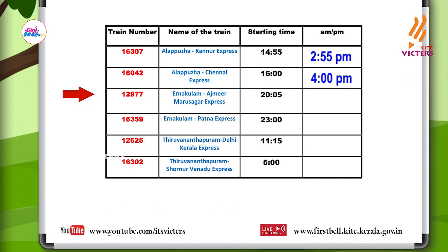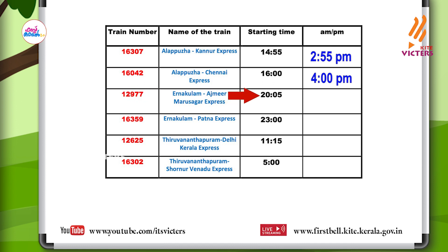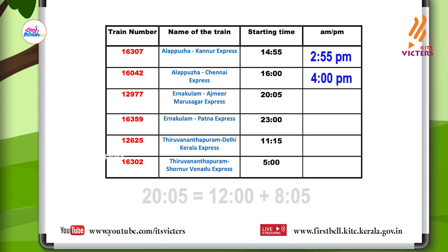Look at the third one. Train number 12977, Ernakulam Ajmeer Marusaga Express. What is the starting time? It is twenty-zero-five. What do you mean by twenty-zero-five? Twelve hours plus eight-zero-five. That means in twelve-hour clock we can write it as eight-zero-five PM.